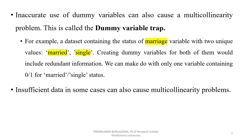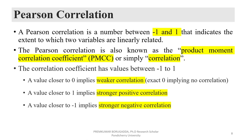Inaccurate use of dummy variables can also cause multicollinearity — this problem is known as the dummy variable trap. For example, if 'marriage' is a feature with two labels — single or married — and you create two dummy variables, you get redundant information. You should use only one of the dummy variables when building the model. Insufficient data in some cases can also cause multicollinearity problems.